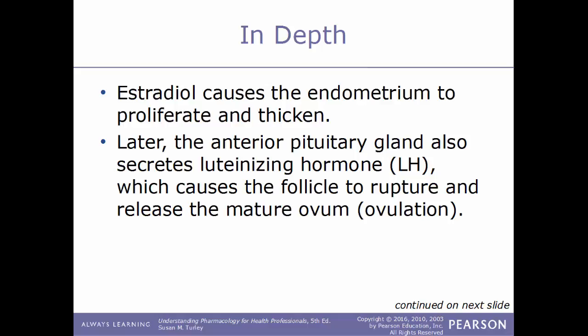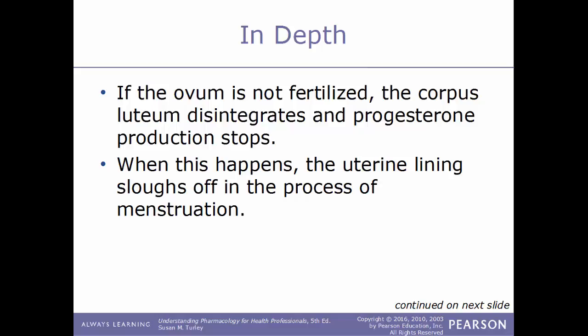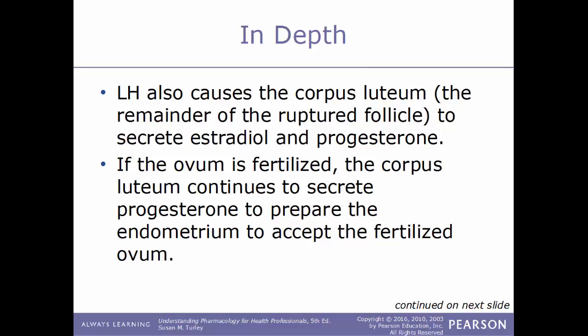If the ovum is not fertilized, the remains of the follicle, called the corpus luteum, will disintegrate and progesterone production will stop. The uterine lining will lose its source of oxygen, the tissue will die, and then slough off in the process of menstruation. LH also causes the corpus luteum to secrete estradiol and progesterone. If the ovum is fertilized, the corpus luteum will continue to secrete progesterone to prepare the endometrium to accept the fertilized ovum.